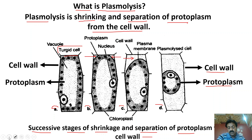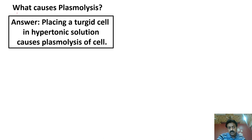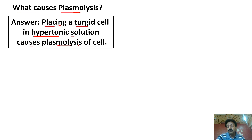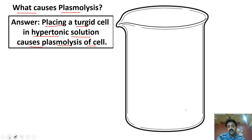Toh aap kaafi poochhoge — plasmolysis kyun hota hai? What causes plasmolysis? The answer is: placing a turgid cell — paani se bhara hua cell — in a hypertonic solution causes plasmolysis. Agar ek turgid cell ko kisi hypertonic solution mein place kar diya jayega, toh phir us mein plasmolysis ka process ho jayega. Hypertonic solution — concentrated solution ko kehte hain — jis mein solutes ki quantity zyada ho, magar paani ki quantity kam ho.